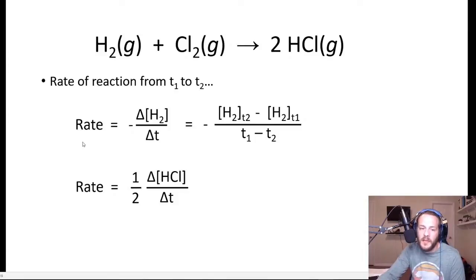If I wanted to define the rate of that reaction or express that in terms of a formula, I could choose one of the reactants. Let's say I'm choosing the hydrogen, the H2. That would simply be minus change in concentration of H2 over delta T, or final time minus initial time.